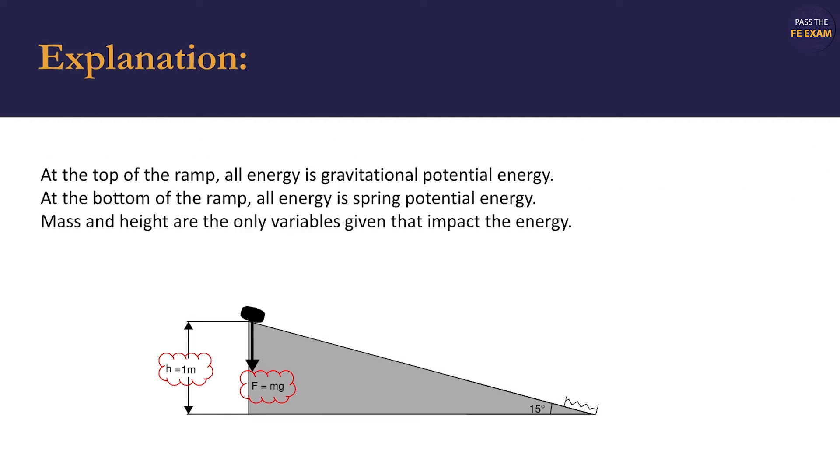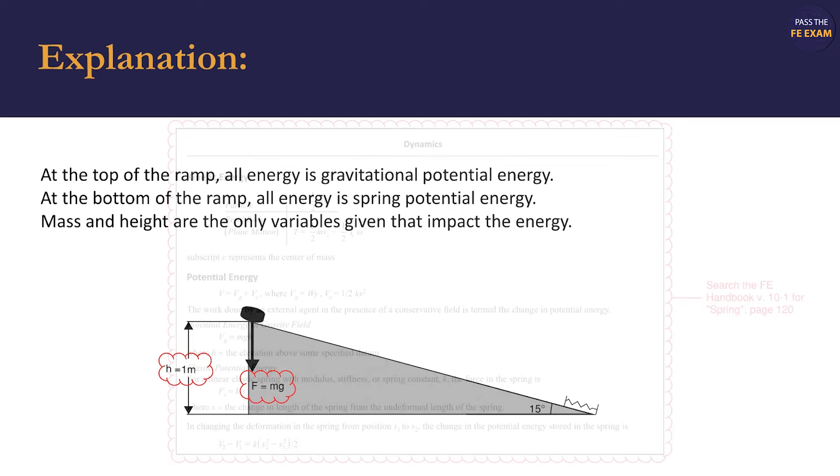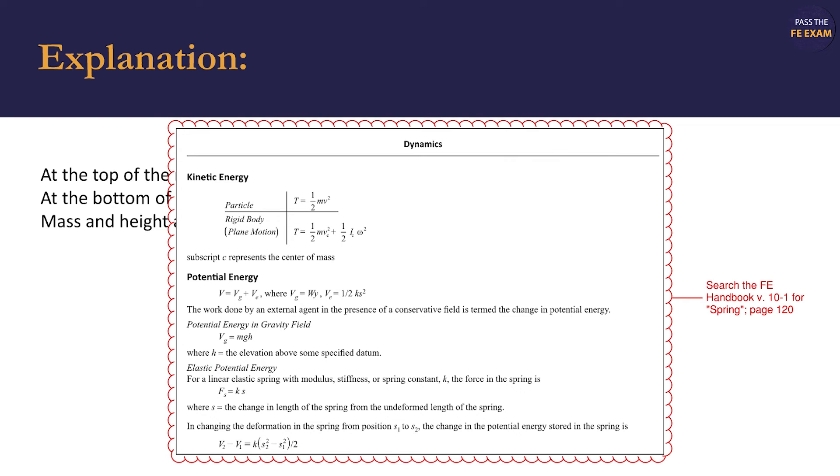The only force exerted on the disc is gravity. Therefore, at the top of the ramp, all energy is gravitational potential energy. After sliding down the ramp and fully compressing the spring at the bottom, all energy is spring potential energy. Therefore, mass and height are the only variables that impact the amount of energy.